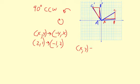y maps to y, comma, negative x. So, again, you switch the coordinates. But this time, the new y value or the old x value switches signs.